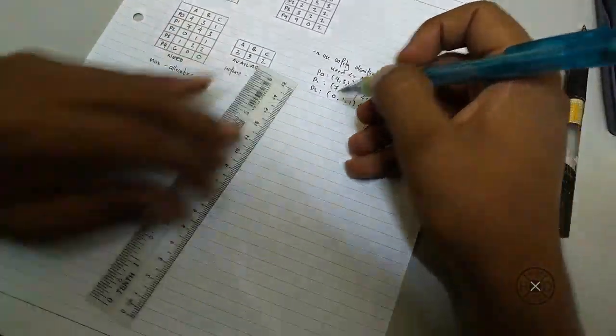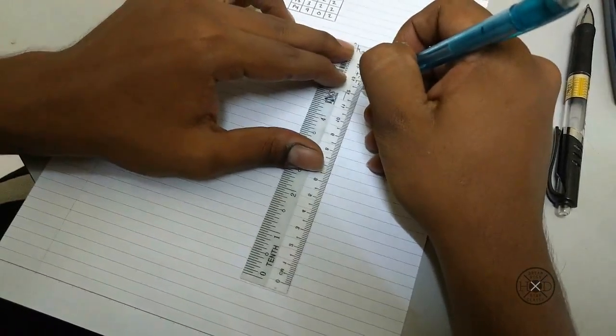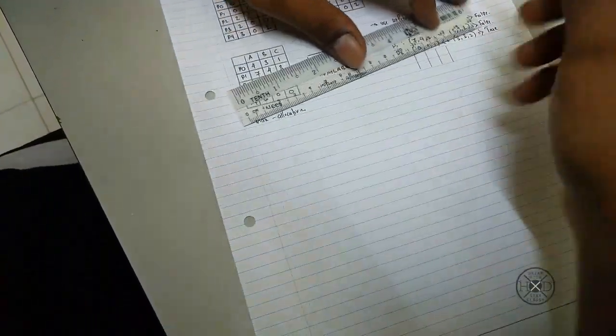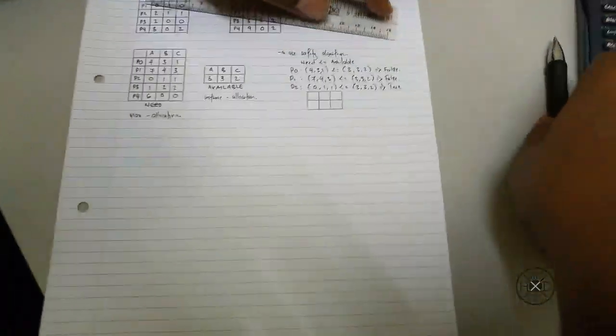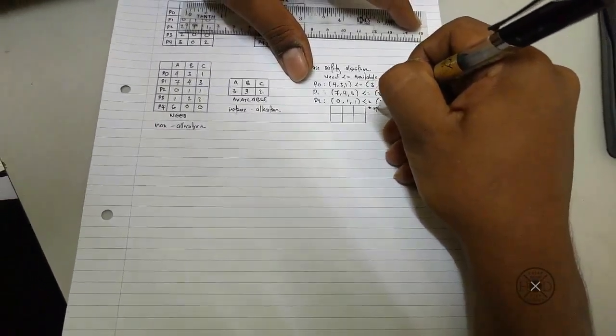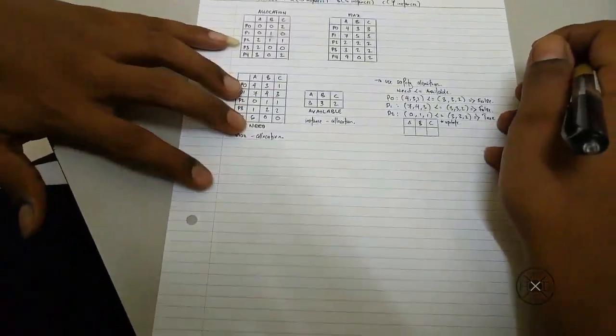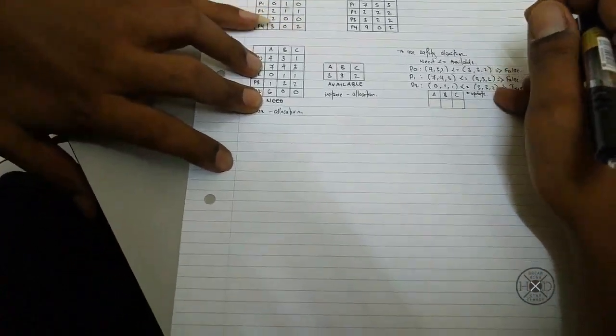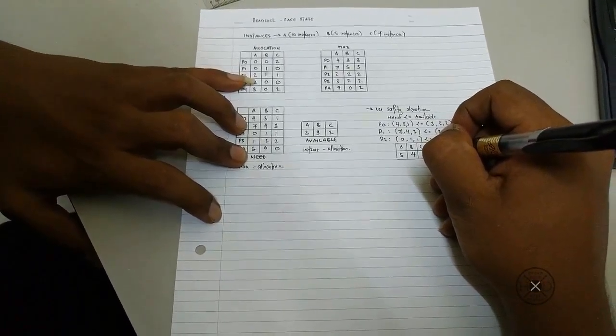When it is true, you need to update a new available table and release what it holds in allocation. As stated in allocation table, for process 2 is 2, 1, 1. So it will add up with 3, 3, 2. So it will be 5, 4, 3.